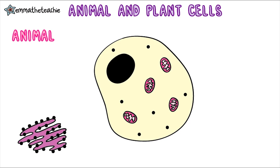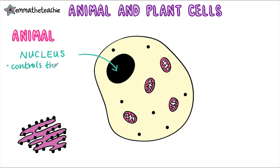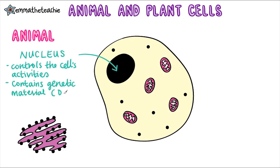We're going to start with animal cells and look at the organelles it contains and the functions of each. The first organelle is called the nucleus — that's this big black blob. It controls the cell's activities, so basically everything, and it also contains genetic material, which in animal cells is DNA.